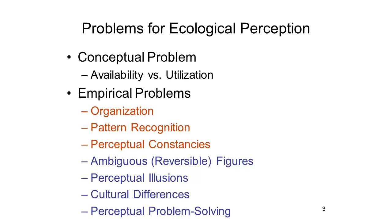Setting this conceptual problem aside, the ecological view encounters a number of empirical problems — problems with how people actually perform in perception experiments and in the real world — that suggest it is not the entire picture of perception. Yes, the stimulus provides information for perception, and perceivers can extract some of it to form mental representations. But there are other things going on as well, and those are the topic of this lecture.